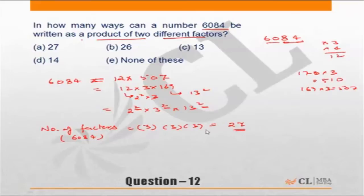So how many different factors are there? There are total of 27 factors but there are 13 pairs, and 1 is the square root of the number which is 2 into 3 into 13.